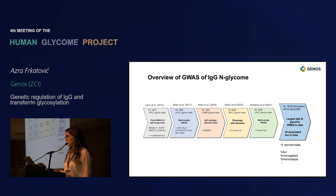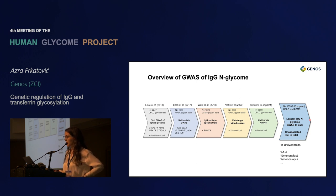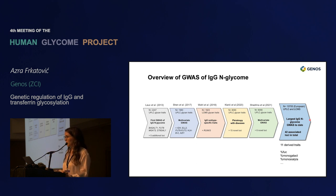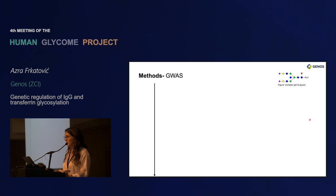Here I will present the results of the latest IgG glycosylation GWAS, in which we included around 13,700 samples and found 42 associated regions across the genome. The phenotype was the percentage of structures containing a certain sugar unit, such as the percentage of fucosylation — the percentage of structures that contain core fucose in their structure.